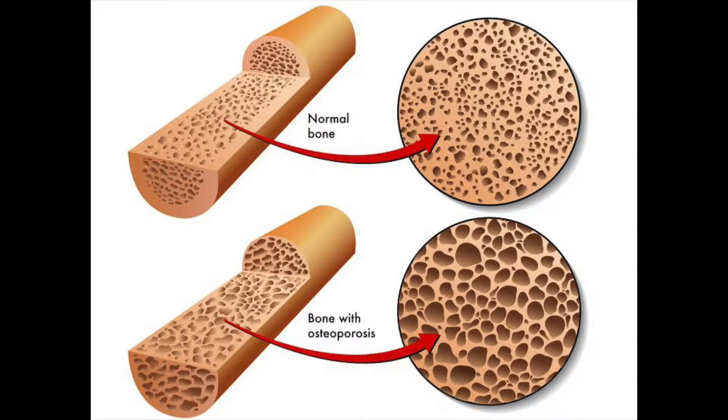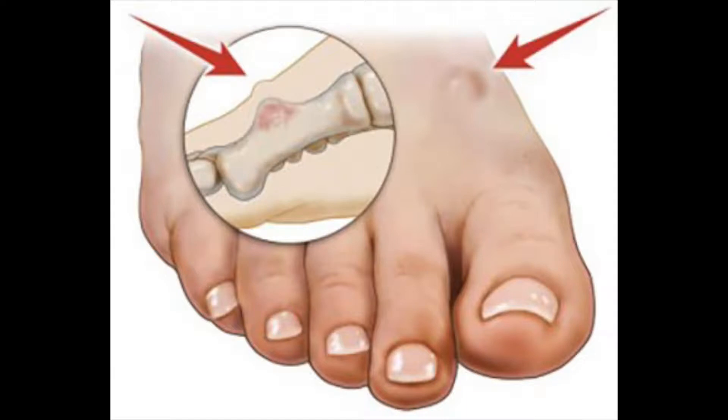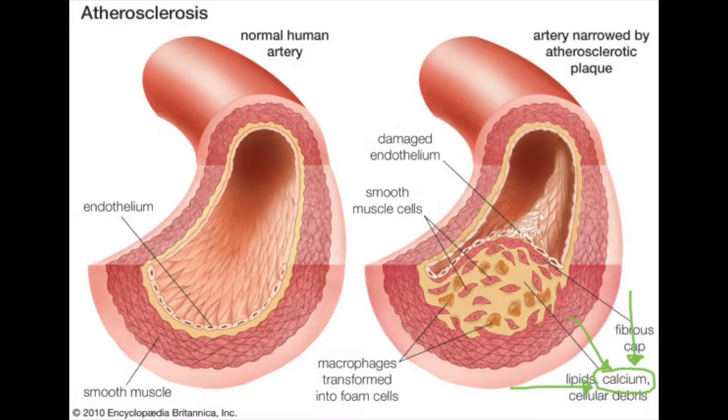Osteopenia and osteoporosis are both conditions which involve the demineralization of your bone and the weakening of the bone tissue itself. This happens through acidic environments within the body. When your body is acidic, it pulls calcium from your bones and puts it into your blood. When calcium is floating around in the blood, it can be deposited in areas of inflammation, generating bone growth and bone spurs. It can also lead to arterial sclerosis, which is the deposition of calcium onto your arteries, secondary to inflammation within the arteries themselves.